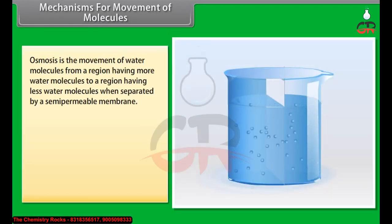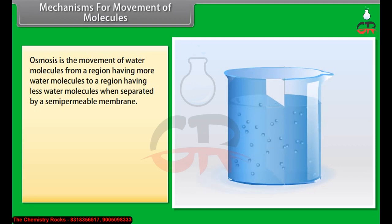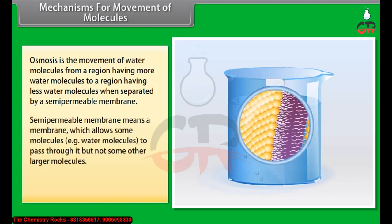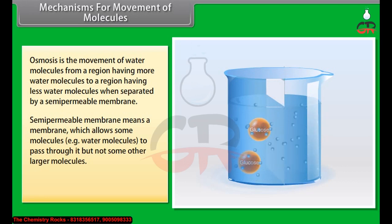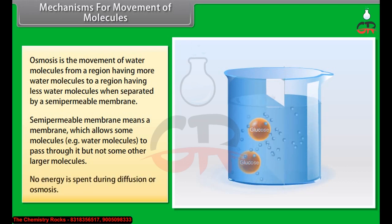Osmosis is the movement of water molecules from a region having more water molecules to a region having fewer water molecules, when separated by a semi-permeable membrane. A semi-permeable membrane allows only certain molecules — that is, water molecules — to pass through it, but not larger molecules. No energy is spent during diffusion or osmosis.